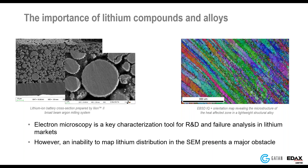However, there is one significant hurdle: an inability to map the lithium distribution in the scanning electron microscope. For example, in lithium-ion batteries it's not possible to reveal the charge state of cathode or anode materials in the SEM, or to reveal the evolution of structures including the formation of solid electrolyte interfaces, lithium plating, or dendrite growth.